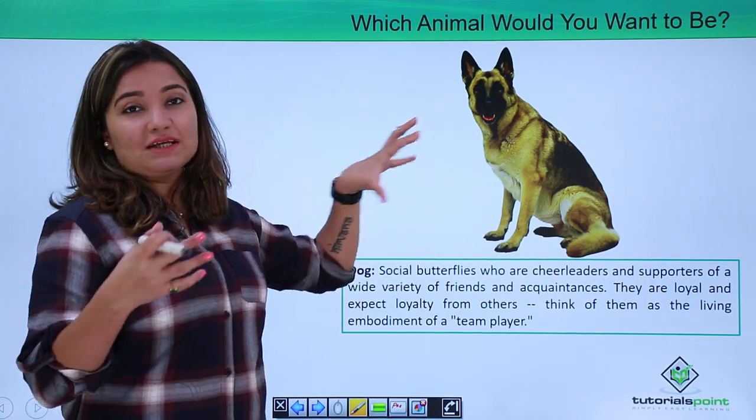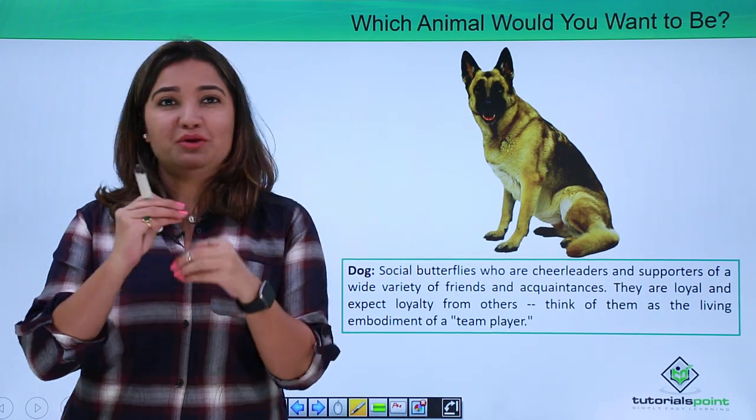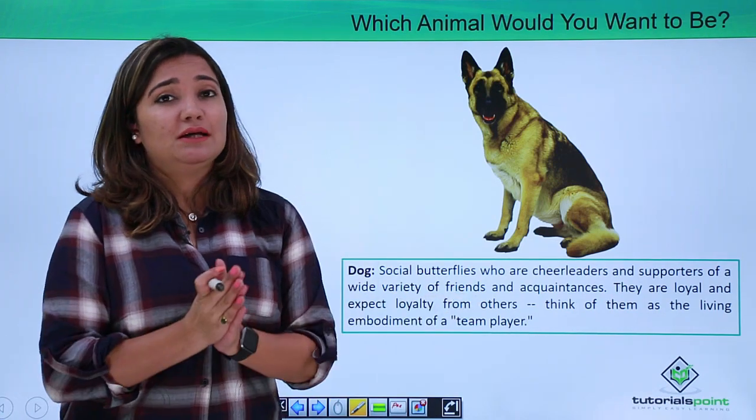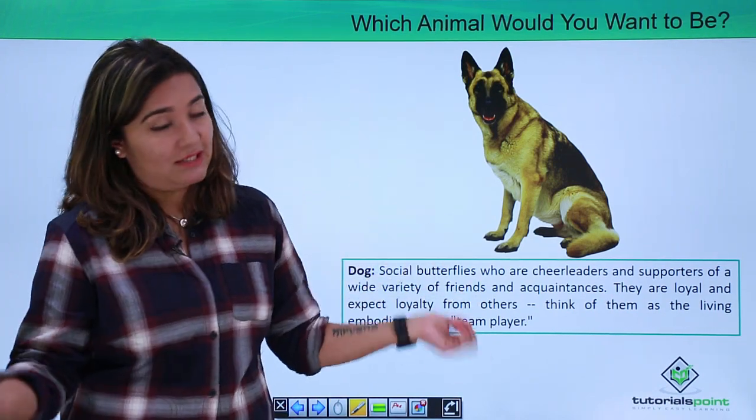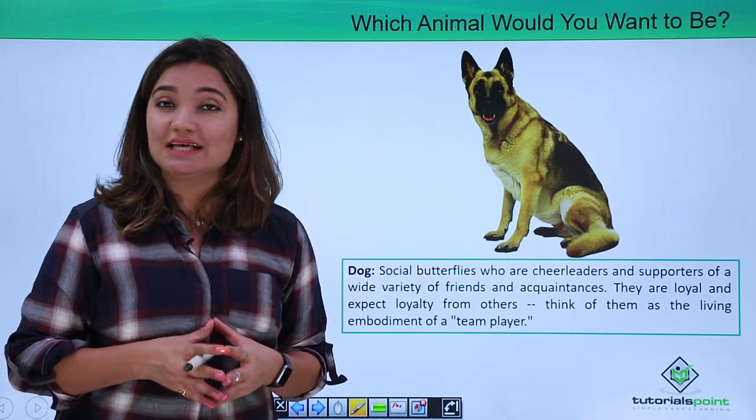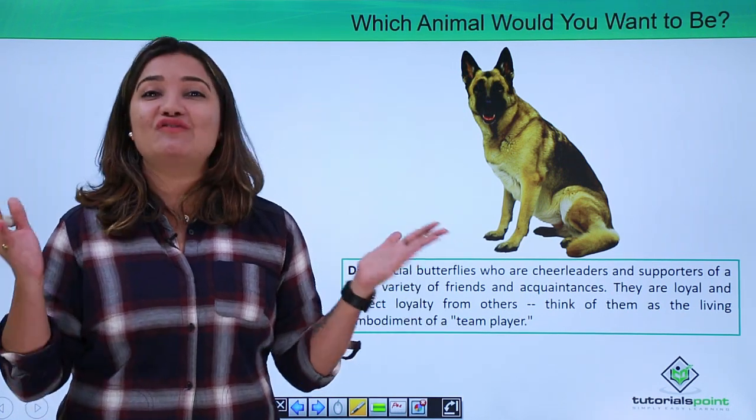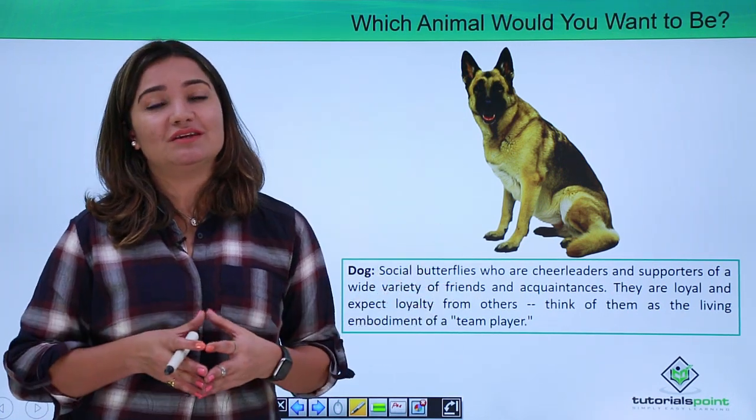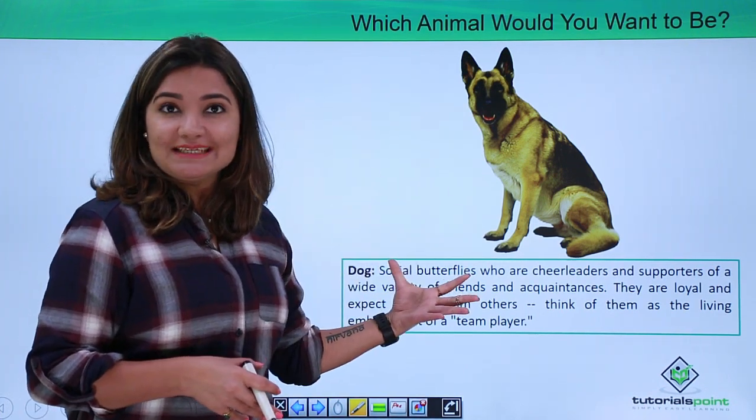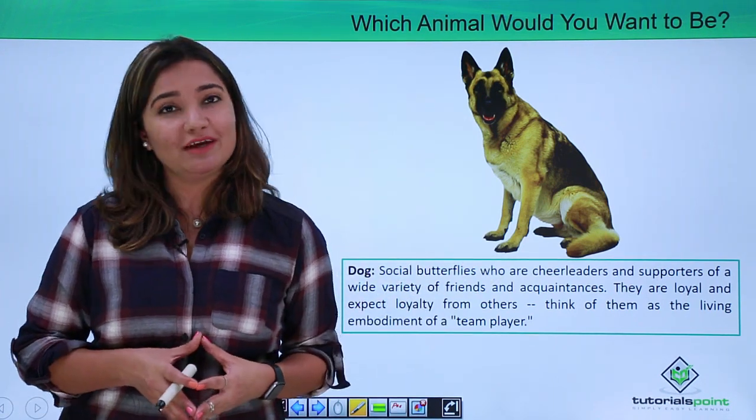It definitely would sound very fake because the way you're gonna answer the questions which the interviewer has asked you before or after this would also portray a certain type of personality that you have. Based on that if you choose a particular personality type here, both these answers should be hand in hand, they should be in sync. Otherwise it might sound fake which you don't want, or it might sound that you're not clear about the kind of personality that you have, which you don't want to portray during your interview.